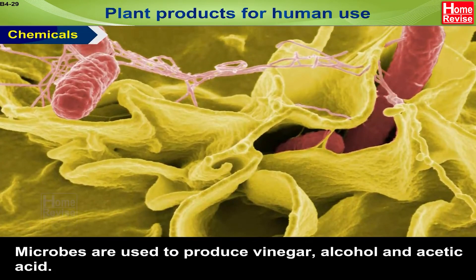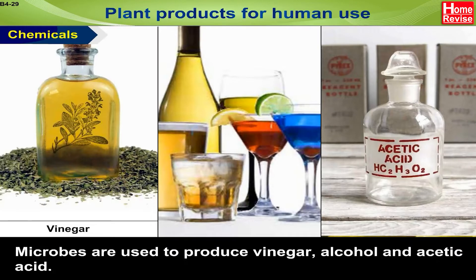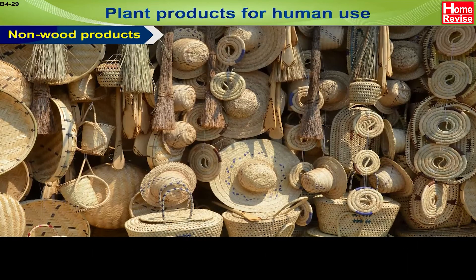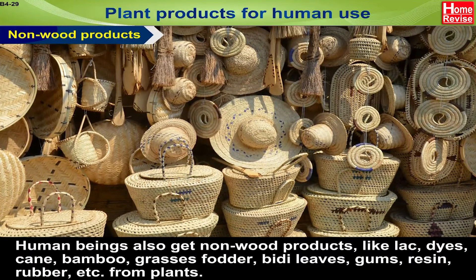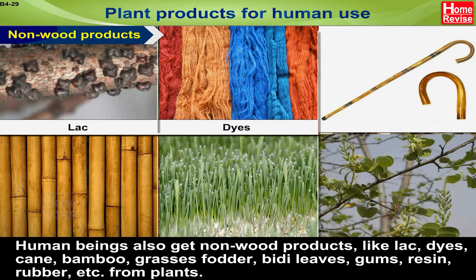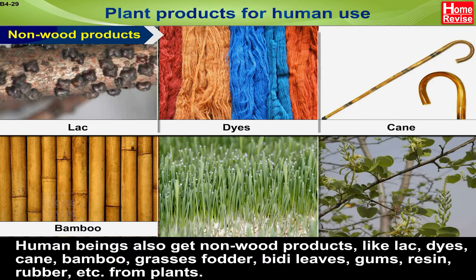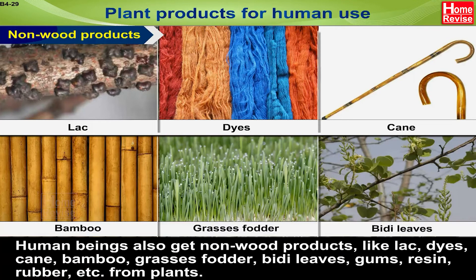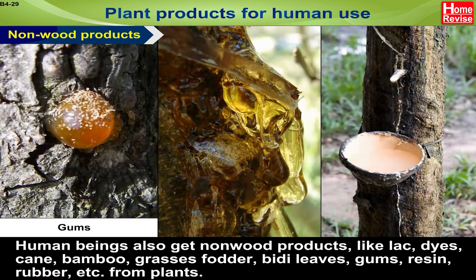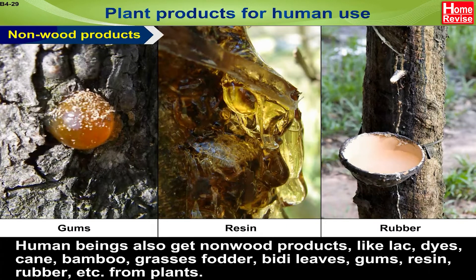Chemicals: Microbes are used to produce Vinegar, Alcohol, and Acetic Acid. Non-wood products: Human beings also get non-wood products like bark, dyes, cane, bamboo, grasses, fodder, beady leaves, gums, resin, rubber, etc. from plants.